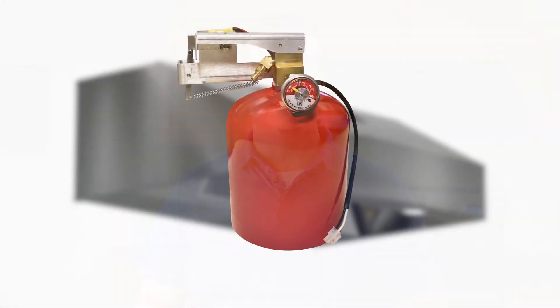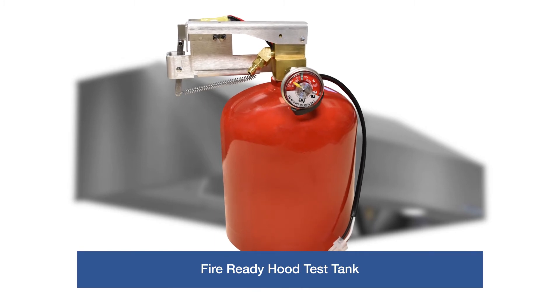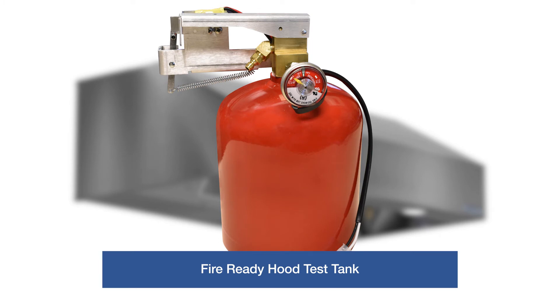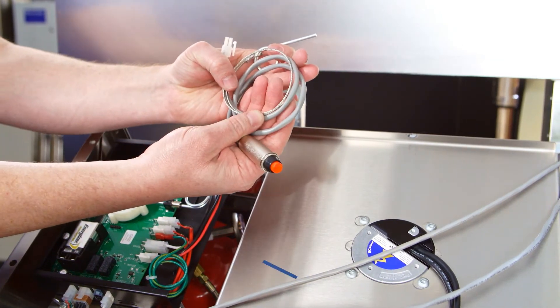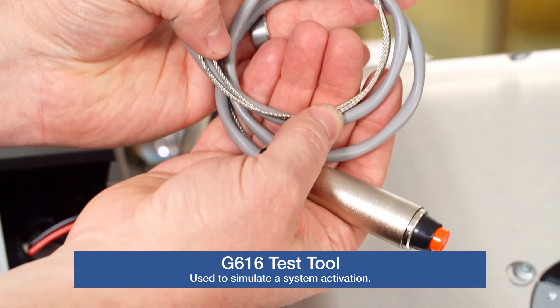If a fire system puff test is required, a test tank like this one can be provided. These tanks are only for test purposes and are charged with nitrogen. The purpose of a puff test is to demonstrate proper fire suppression operation. Authorized guardian distributors and installers should have a G616 test tool that is used to simulate a system activation. Note that a remote pull station option will also serve the same purpose for testing.